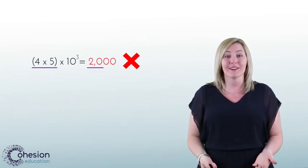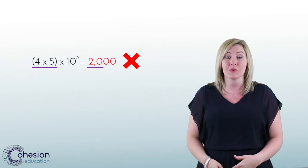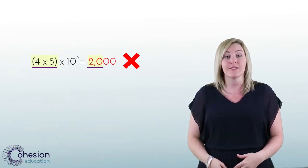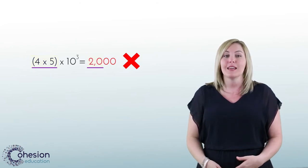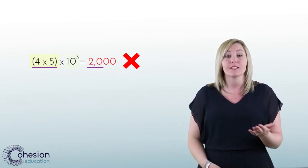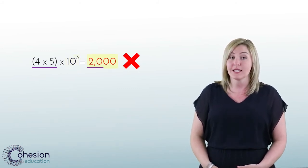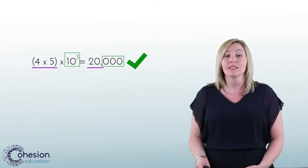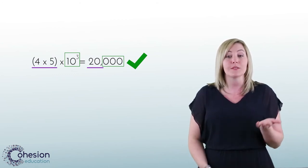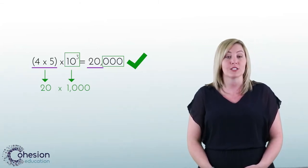A common error students can encounter when using basic facts to solve larger multiplication problems is when the basic fact has a zero in the product. For example, if a student encounters 4 times 5 times the third power of 10, they may only answer 2,000 instead of the actual answer of 20,000, leaving out the zero that is in 4 times 5, which is 20, then adding on the three extra zeros.